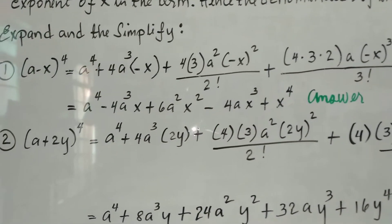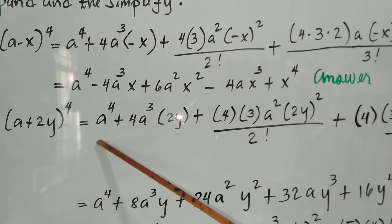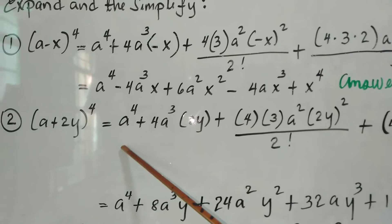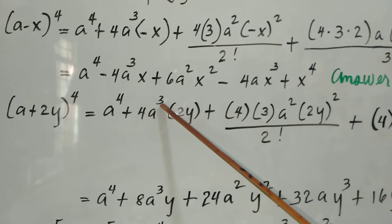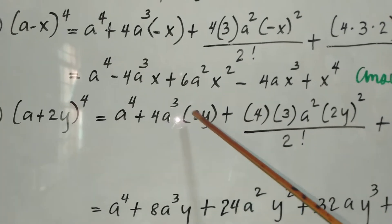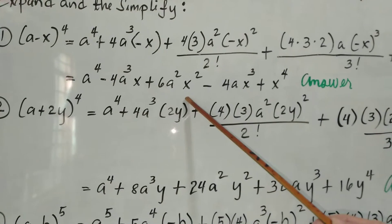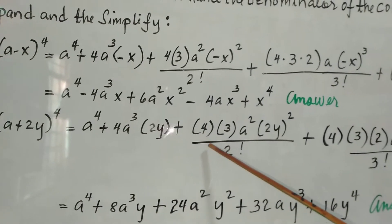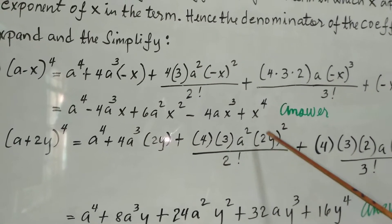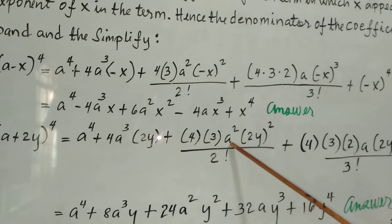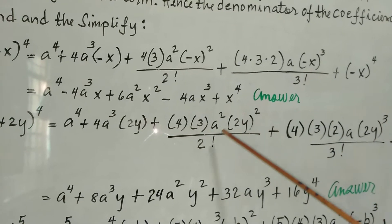The second problem is (a plus 2y) to the fourth. The first term is a to the fourth. The second term is 4a cubed, as the power of a decreases by 1, and 2y appears as the second term. The denominator is also the power of 2y. Then 4 times 3, a squared, and 2y increases as a decreases.